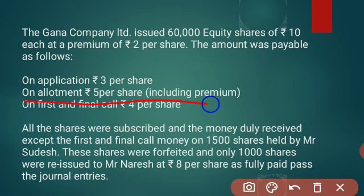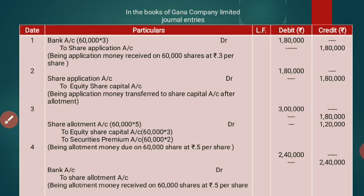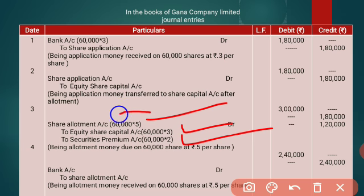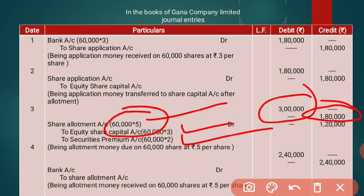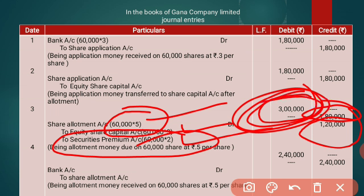The next stage is allotment. On allotment, 5 rupees is received which includes the premium of 2 rupees. The journal entry for making the allotment is: Share Allotment Account Dr to Equity Share Capital Account and to Securities Premium Account. For 60,000 shares at 5 rupees, the company will receive 3 lakh rupees in total — 1,80,000 for share capital at 3 rupees and 1,20,000 for securities premium at 2 rupees.